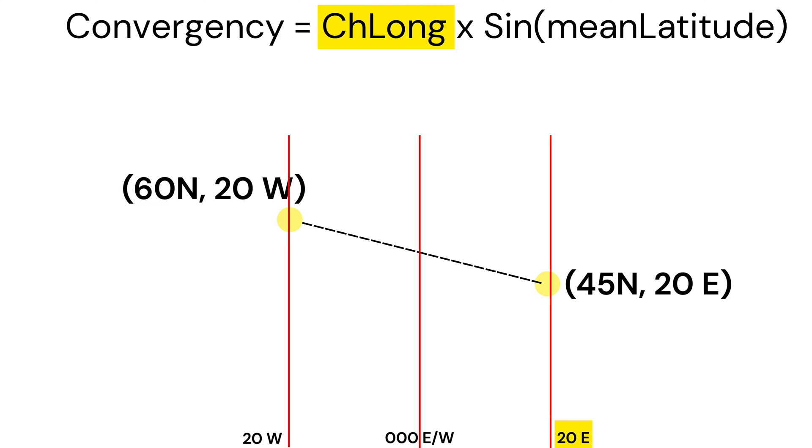To find total distance between them, add both: 20 degrees east plus 20 degrees west equals 40 degrees. This 40 degrees is our change in longitude. It tells how far apart these two lines are. To find mean latitude...